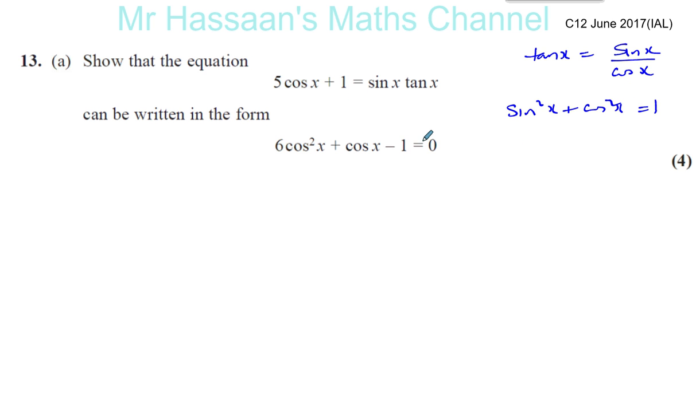So what I'm thinking first of all is let's replace the tan x with sine x over cosine x. Let's see what happens there. So you have 5 cosine x plus 1 equals sine x times, instead of tan x, I'll put sine x over cosine x.